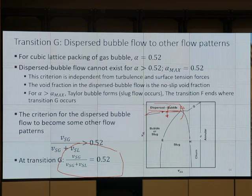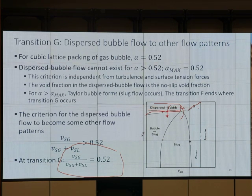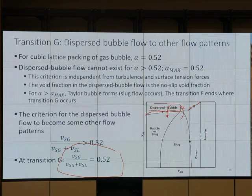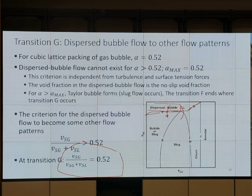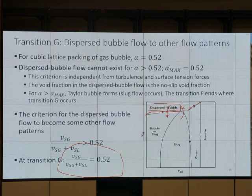That line is written as alpha equals 0.52. Do we have that line in horizontal flow? Let's look at your book. No, right? In horizontal flow you have H_L/D equal to 0.35. Previously, you had something like H_L/D equal to 0.35 for Transition G.